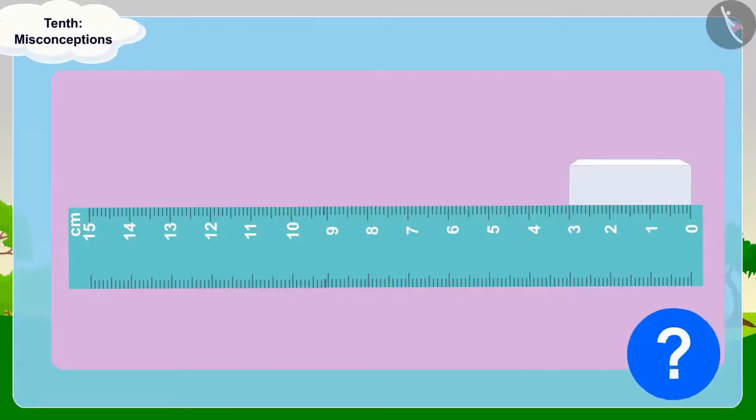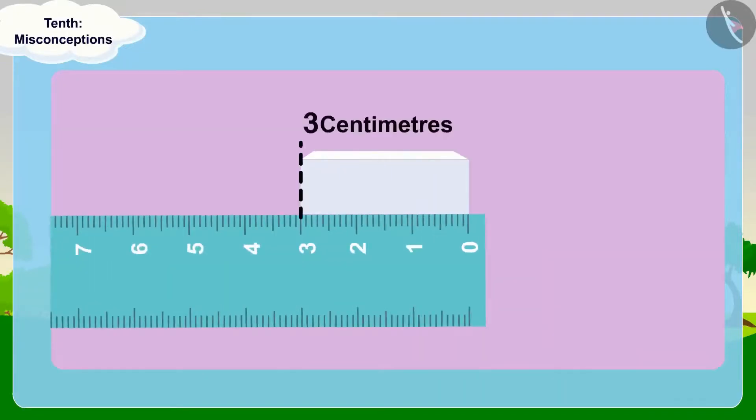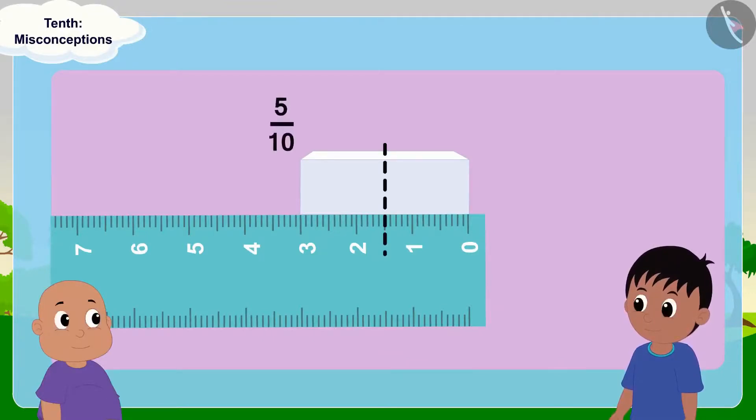Raju measured the eraser with a ruler. Children, can you tell how long the eraser is? Yes, absolutely right. The eraser is 3 centimeters long. Now, Raju and Babalu saw that half of the eraser is 5 tenths more than a centimeter.